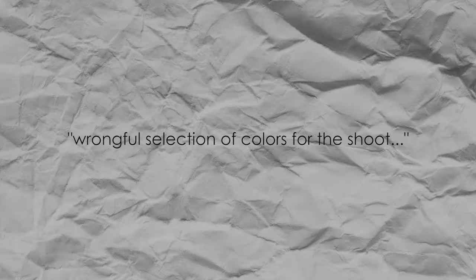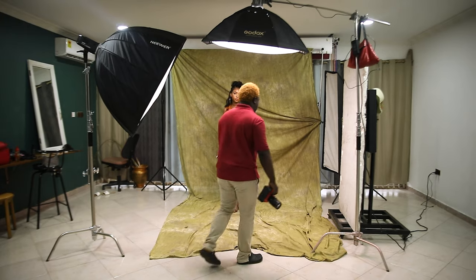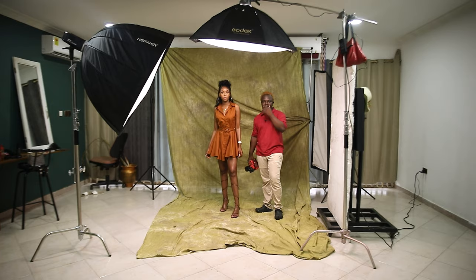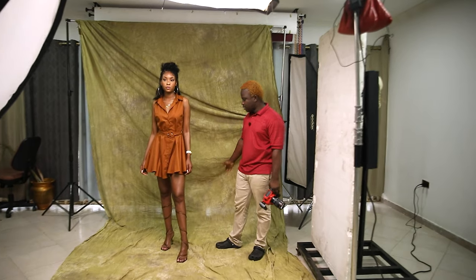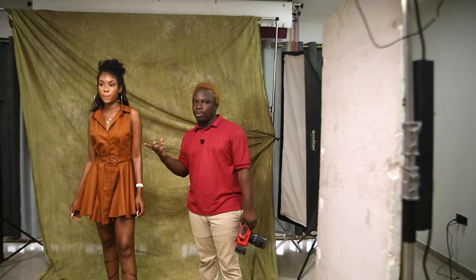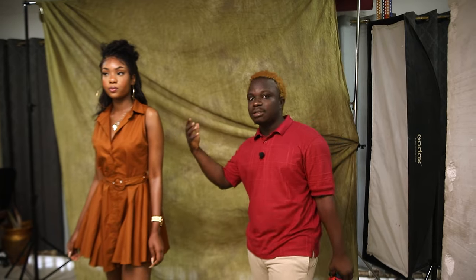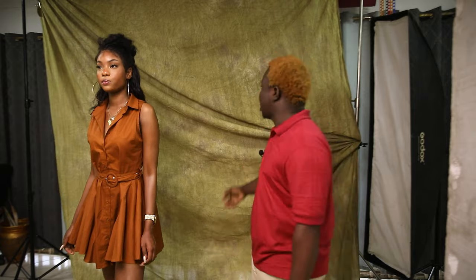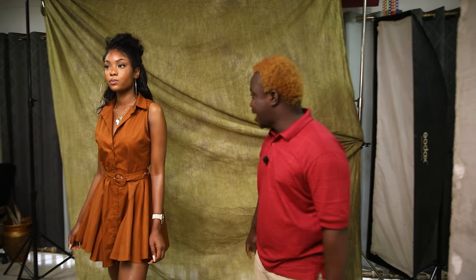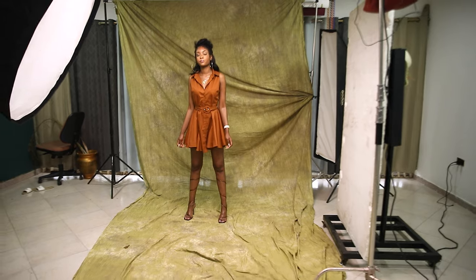The next thing to talk about is color combinations. I asked our model to provide pictures of her outfit choices, and I had to pick. I borrowed this green backdrop because I knew she was going to wear something brown and white. Knowing she's a melanin brown model with a brown outfit, I chose the green backdrop to complement the brown outfits.